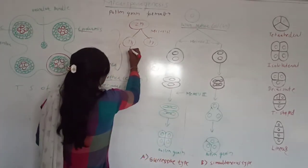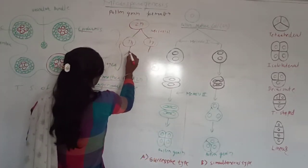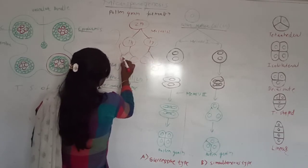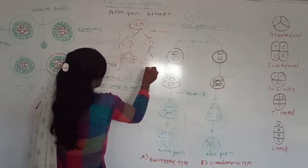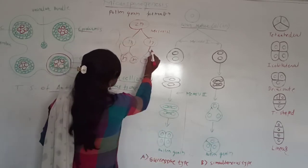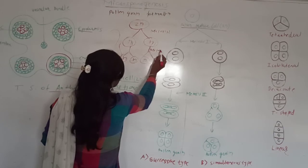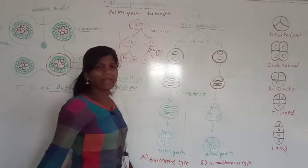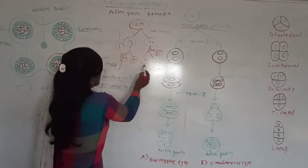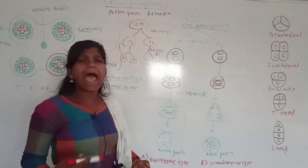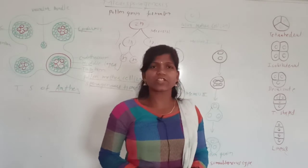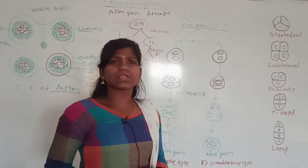After the reduction division (meiosis I), that daughter cell again undergoes mitotic division (meiosis II) and produces two more daughter cells, which are also haploid in number. So, in meiosis, the result of meiosis I and meiosis II together produces four daughter cells which are haploid in number. This is the difference between mitosis and meiosis.